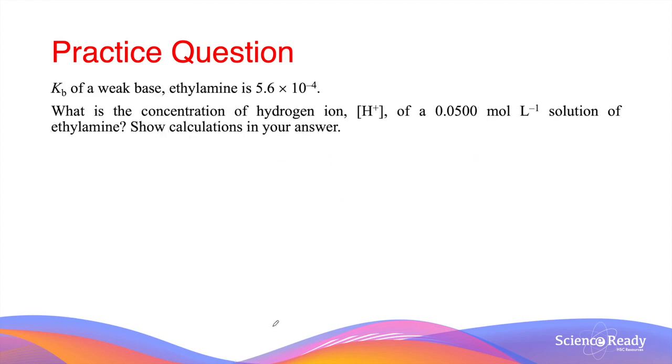Let's take a look at a more difficult question. Kb of a weak base, ethylamine, is 5.6 times 10 to the minus 4. What is the concentration of hydrogen ion of a 0.05 mol per liter solution of ethylamine?